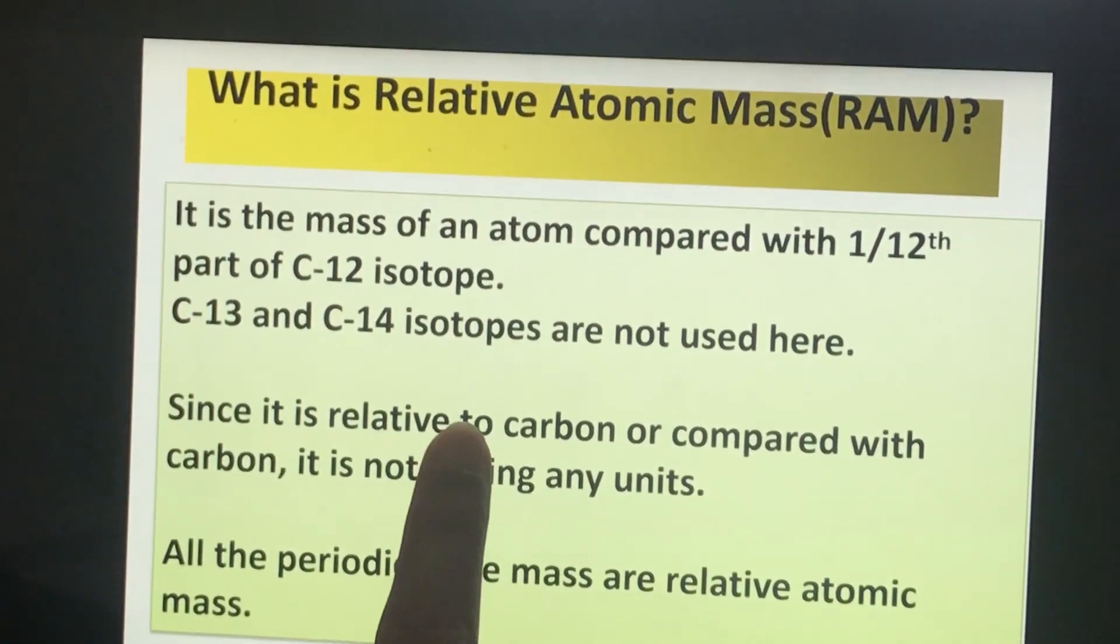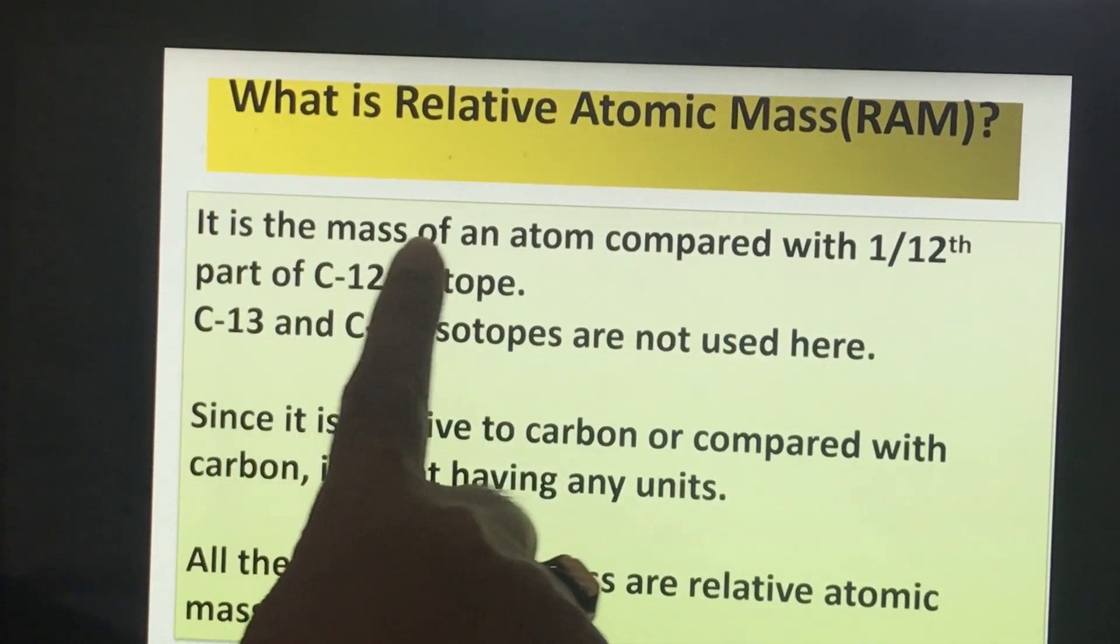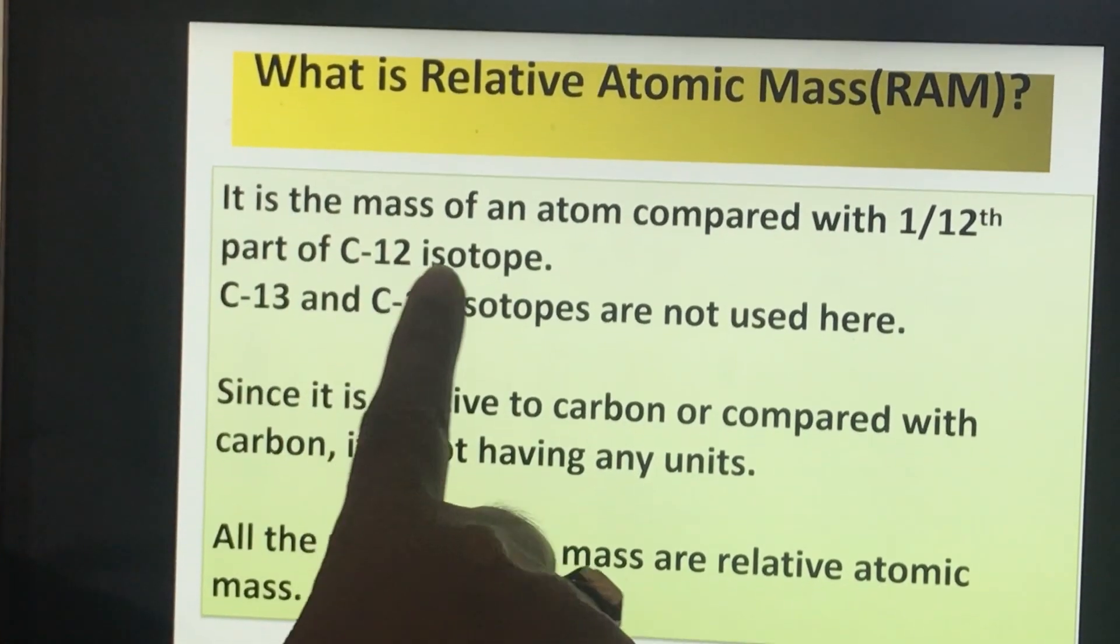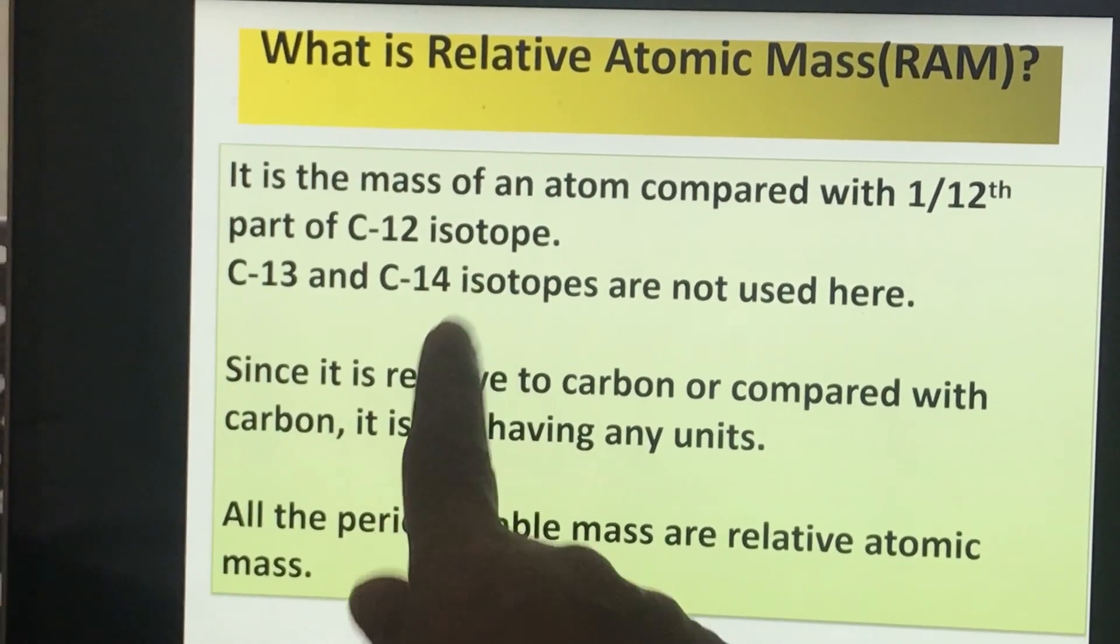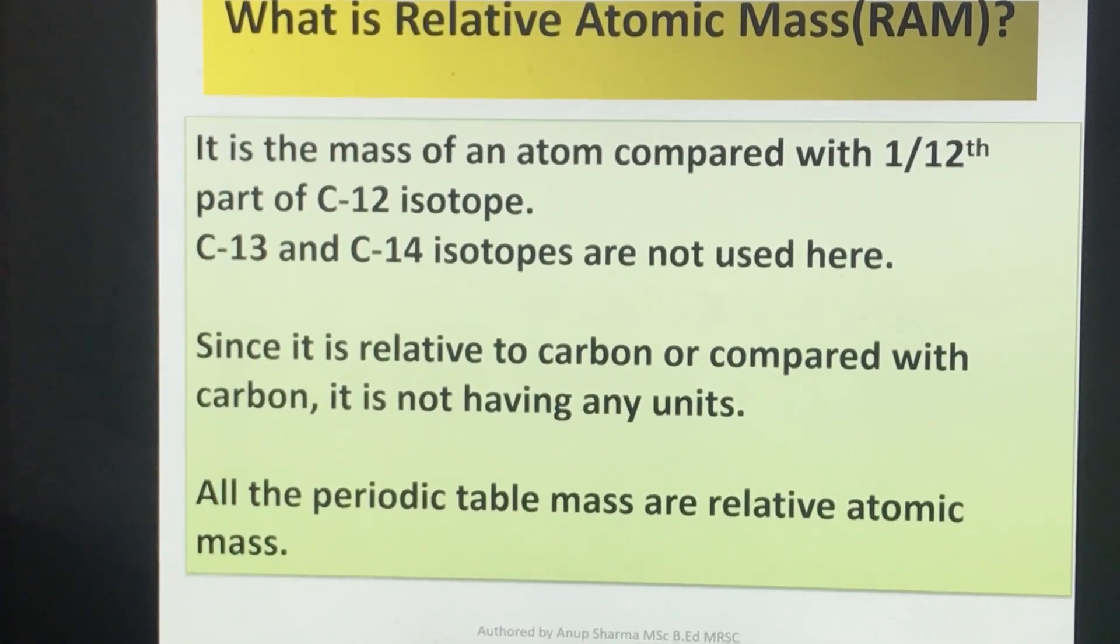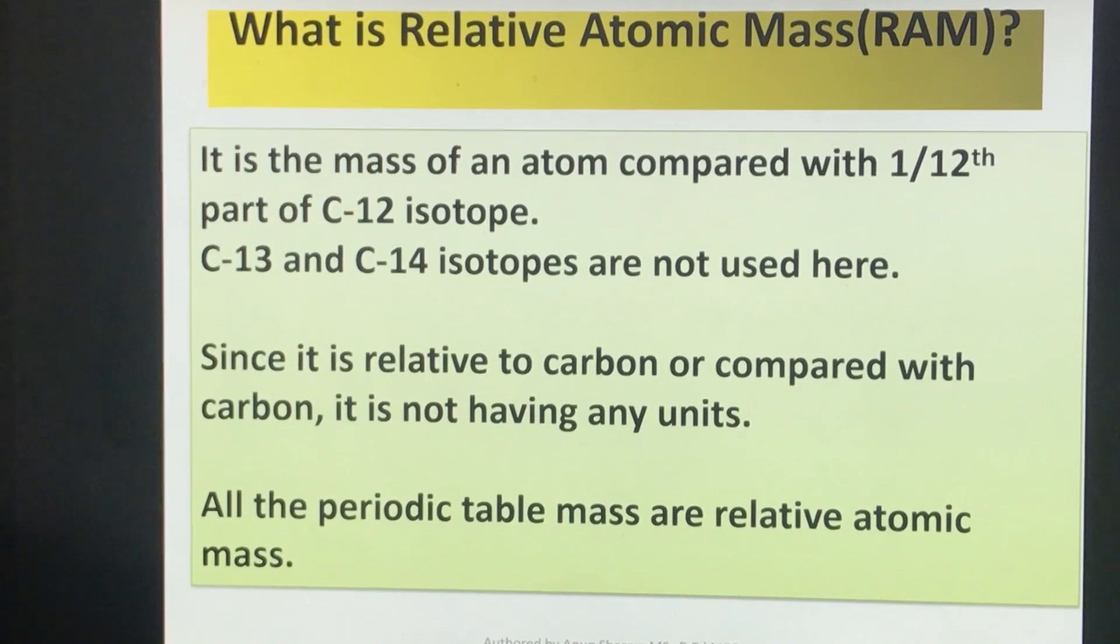What is relative atomic mass? It is the mass of an atom compared with 1/12th part of C-12 isotope. We know carbon has many isotopes like carbon-12, carbon-13, and carbon-14. What is the difference between these three types of isotopes?